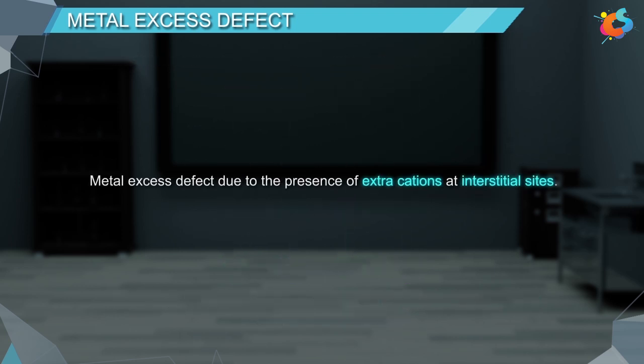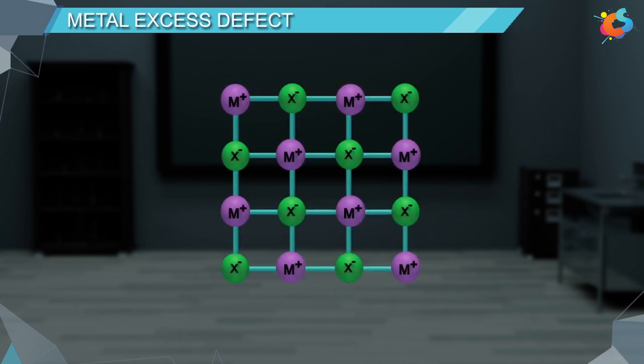Metal excess defect due to the presence of extra cations at interstitial sites. In this type of defect, metal excess is caused by an extra cation occupying the interstitial site. To maintain electrical neutrality, an extra electron is also present in some other interstitial site. This defect is found in crystals having Frenkel defects.